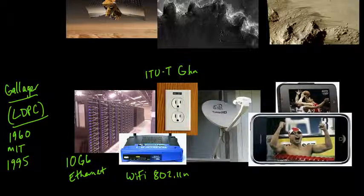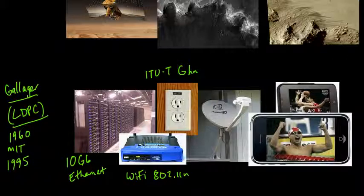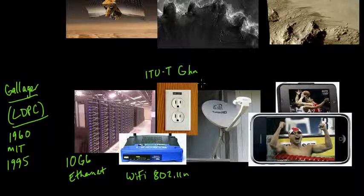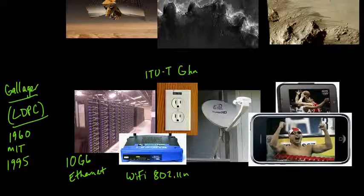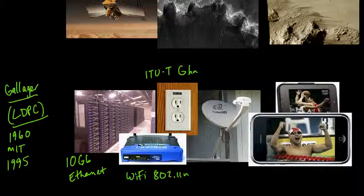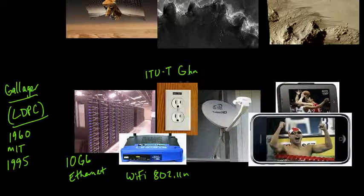One of the standards for doing this is called ITU-G.hn, which is particularly applicable for consumer electronics — a smart oven or dishwasher — but also for a smart grid. If you want a very energy-efficient power grid, being able to control things via internet would be very useful. This uses Gallager codes.